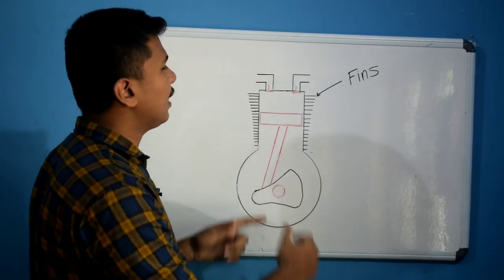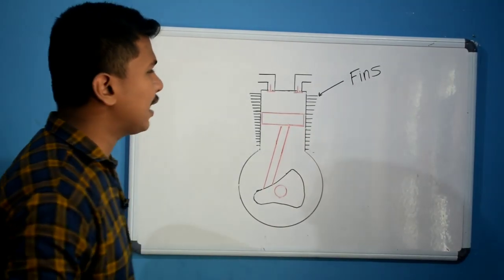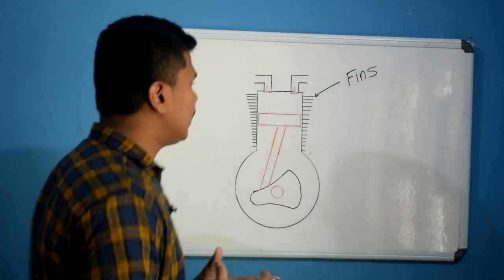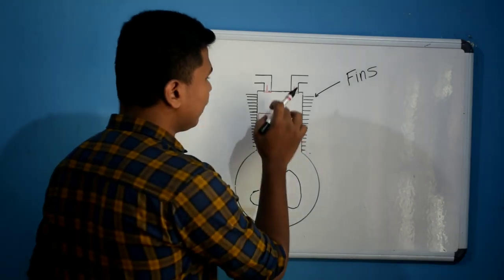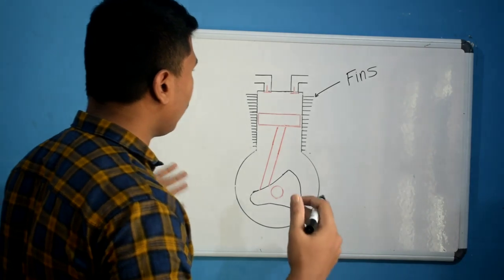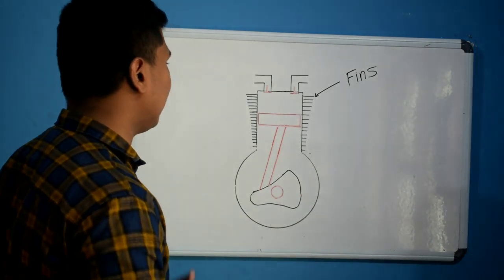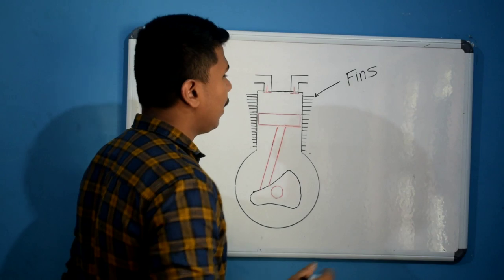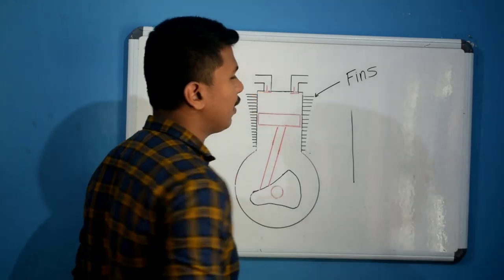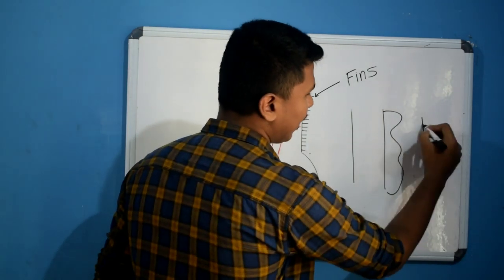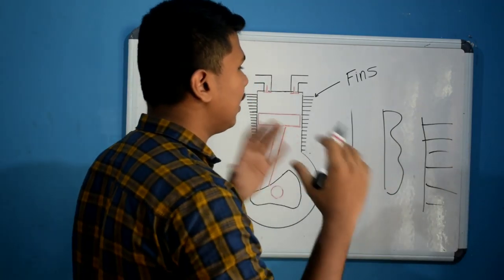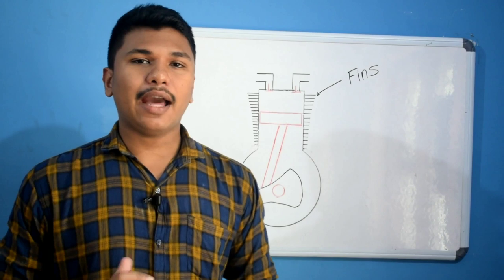With the air cooling system, the cylinder block needs to have straight and tight fins to increase the surface area in contact with air. If the area with air contact is large, the air contact is very important and the heat transfer is very fast.